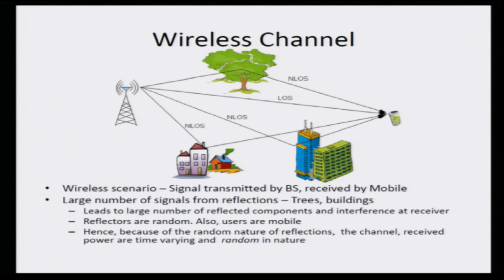Hence, the received signal amplitude and the received signal power at the mobile station is random in nature. Therefore, concepts of probability and random processes are necessary to characterize the signal received at the mobile in a wireless communication scenario, and also the power received at the mobile in a wireless communication scenario.